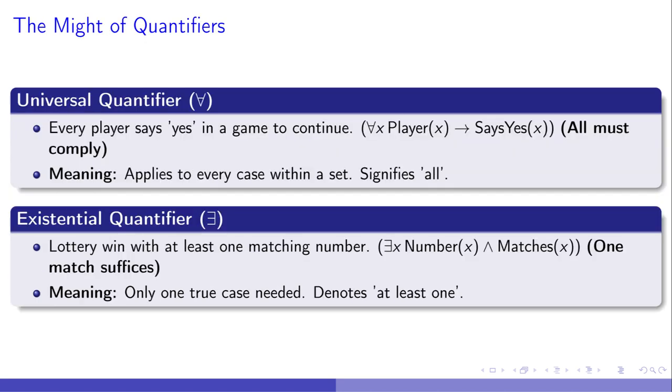Building directly on predicates, how do we express all or some in logic? Enter quantifiers. The universal quantifier demands unanimity. Imagine every player's yes in a game, signifying total agreement. Contrastingly, the existential quantifier exists needs just one instance to hold true, akin to having one winning lottery number. These not only deepen our understanding of logical expressions, but also hint at the complexity and richness of logical analysis we're about to unravel, showcasing the inherent versatility and precision offered by logical constructs.